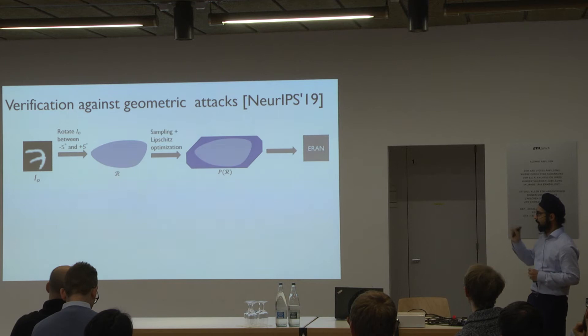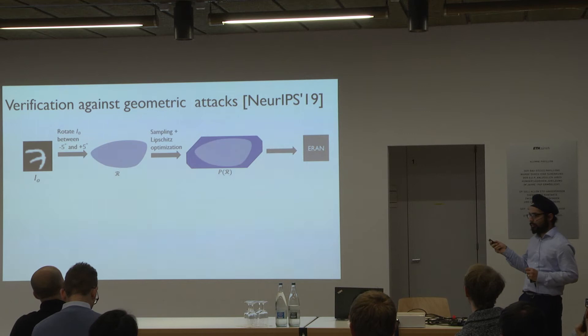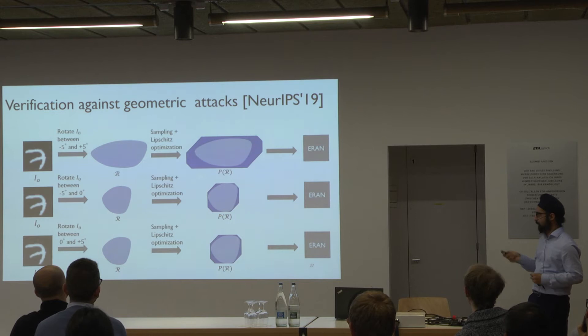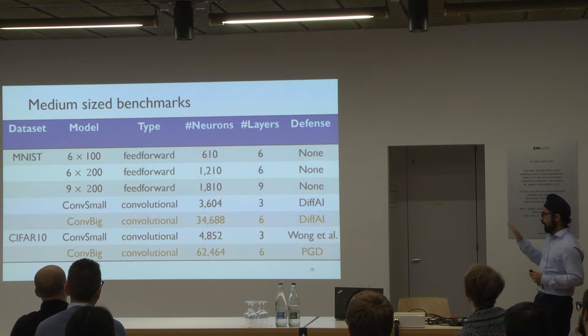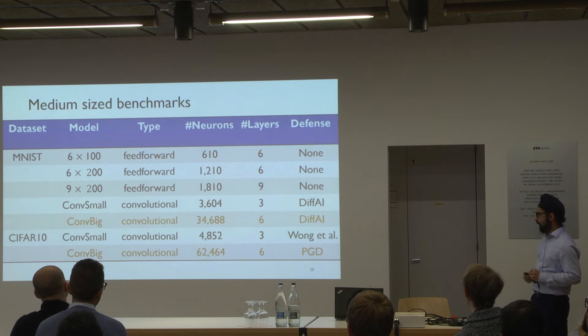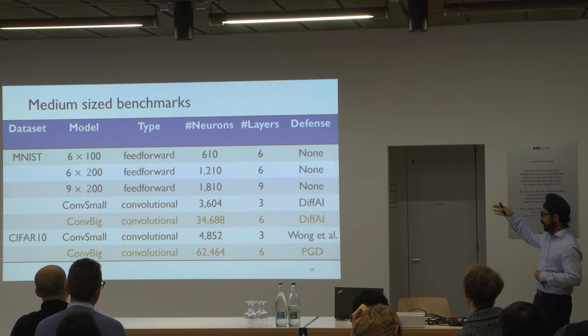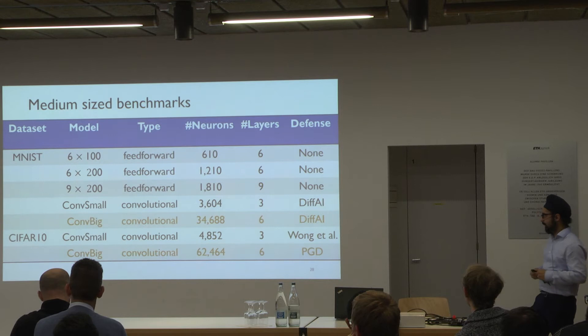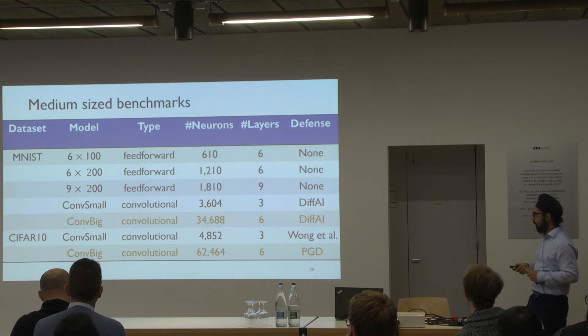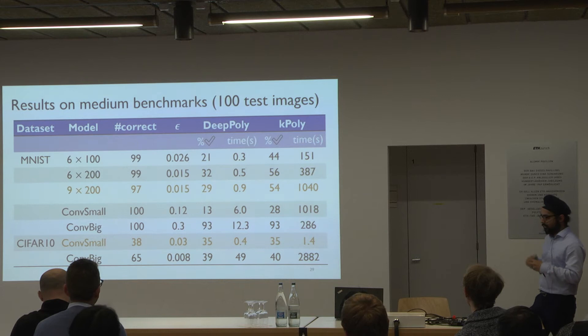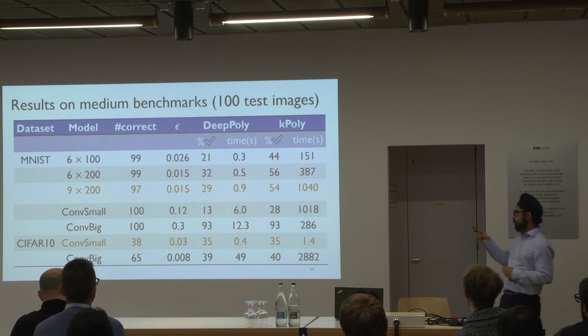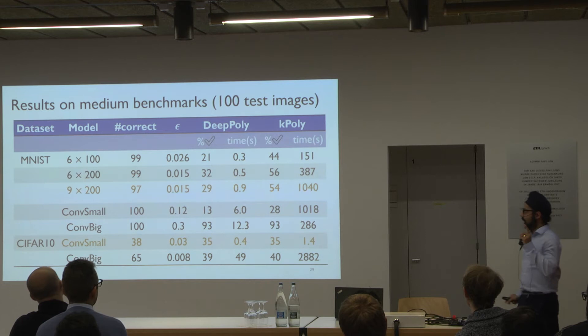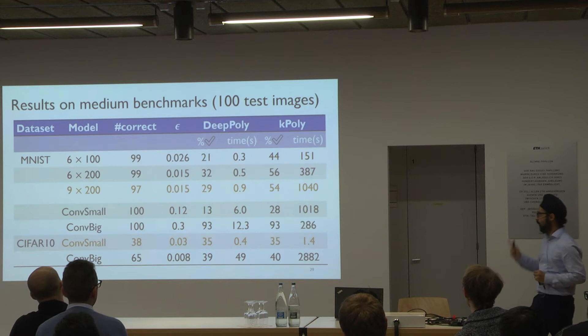For geometric attacks, the input region is non-convex. You can do sampling and Lipschitz optimization to get a polyhedral approximation of the input region, then pass it to ERAN. To improve precision further, you can split the input region. For medium-sized MNIST and CIFAR-10 benchmarks, the largest benchmark is CONVBIG trained with PGT. Comparing DeepPoly and kPoly: DeepPoly is faster — it can verify 29 out of 97 L∞ balls — while kPoly verifies 54 but takes much longer.